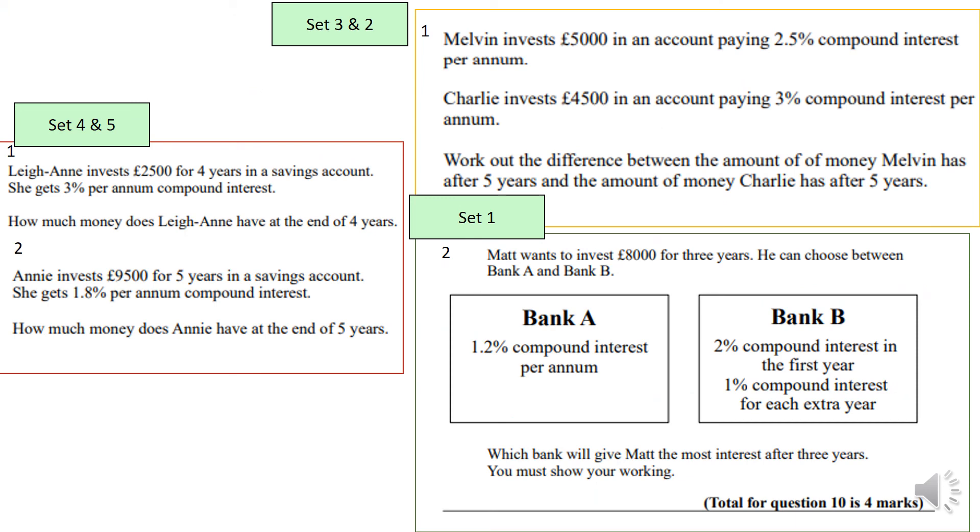If you are in set four and five, have a go at the red box. If you are in set three and two, you need to do both the red box and orange box. And if you are in set one, have a go at one question from the red box and both the orange and green box.